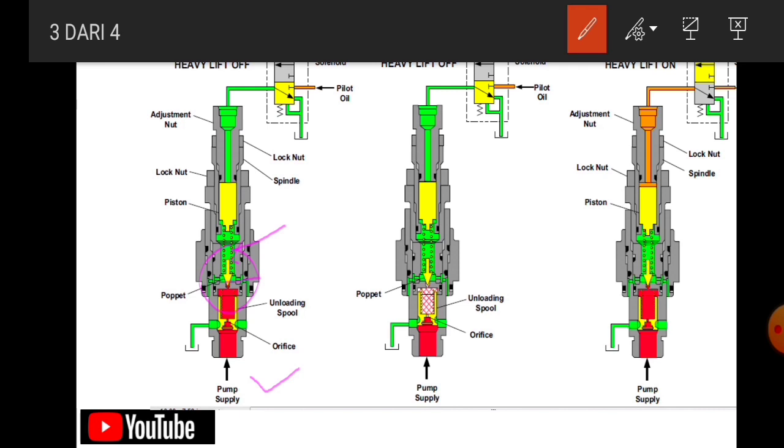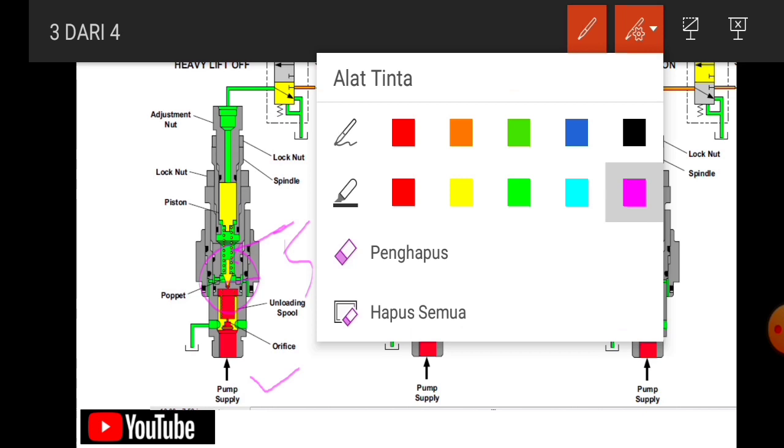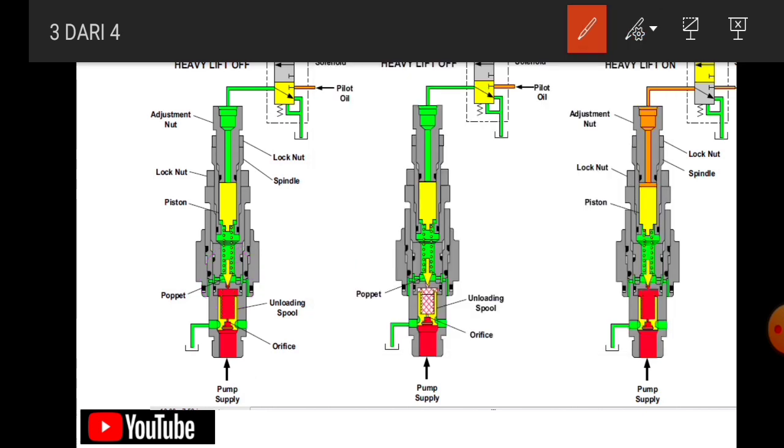Nah kemudian settingan standar daripada spring to stack main relief valve ini itu adalah sebelumnya saya sudah jelaskan bahwa itu sekitar 5000 PSI ya atau setara dengan 350 kg.